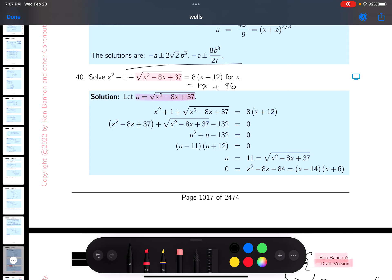So I would rewrite this thing to look like the radicand and that's going to be x squared minus 8x. I see that, and then what do I want? I want plus 37.